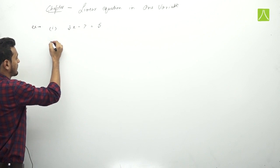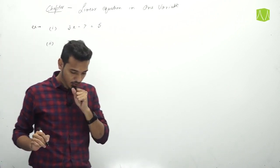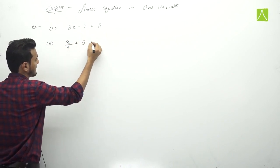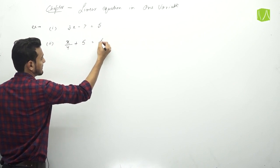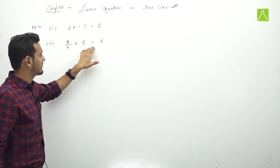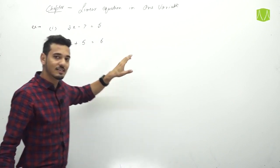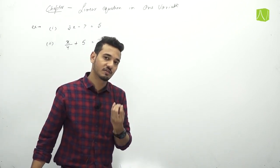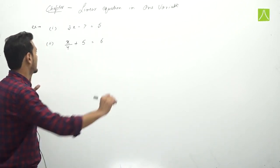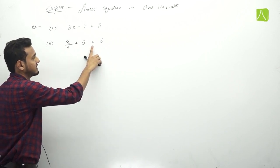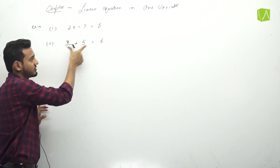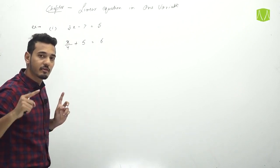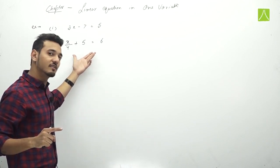Second example: x plus some constants equals to some value. This is also an equation because there is an equals sign, left hand side and right hand side are present. Variable है — x, x की maximum power 1 है। तो यह भी linear equation in one variable है।